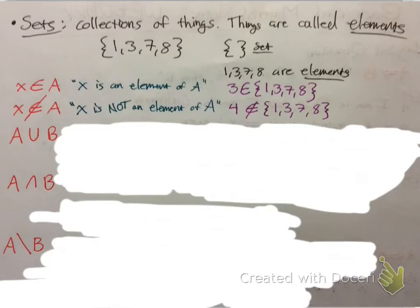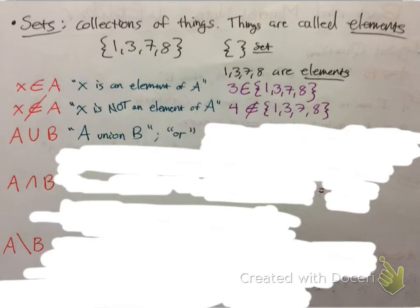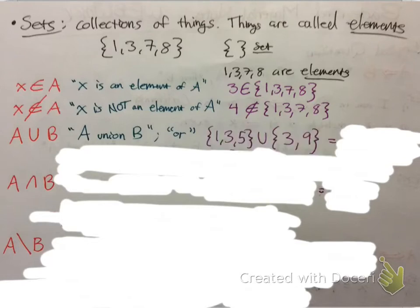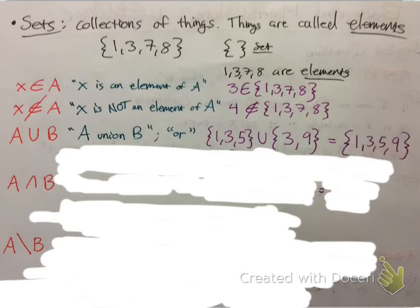Now, what's this mean? You've probably seen it before — the union symbol, A union B. That means 'or,' so like A or B. What's in A or B? If you have two sets, {1, 3, 5} and {3, 9}, the union of these two sets would be everything they both have combined. You would take all four unique numbers, because 3 is common — you don't repeat it.